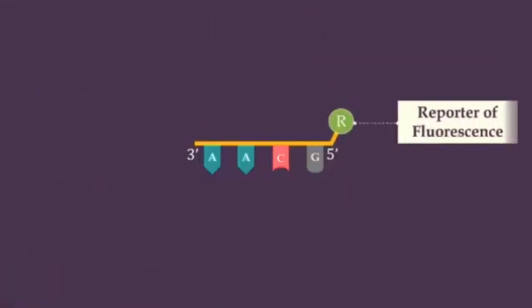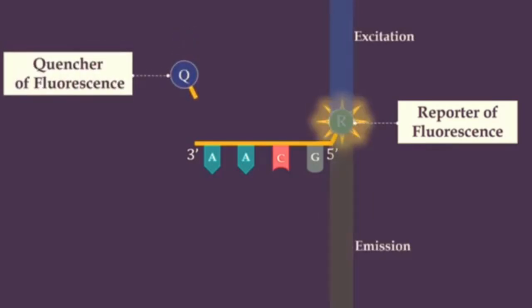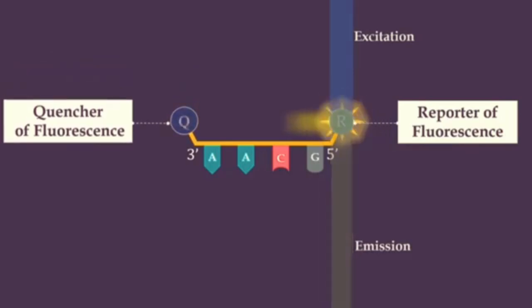Taqman probe consists of a fluorophore covalently attached to the 5' end of the oligonucleotide probe. The fluorescence is emitted by the fluorophore when it is excited by the cycler's light source. Also, this probe consists of a quencher at the 3' end. The close proximity of the reporter to the quencher prevents detection of its fluorescence.